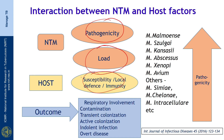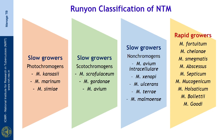The pathogenicity of NTM is listed on the right side of the slide, increasing from bottom to top. It starts from intracellular organisms, which are the least pathogenic, and as you go up, M. kansasii and M. malmoense are the most pathogenic organisms causing human disease.